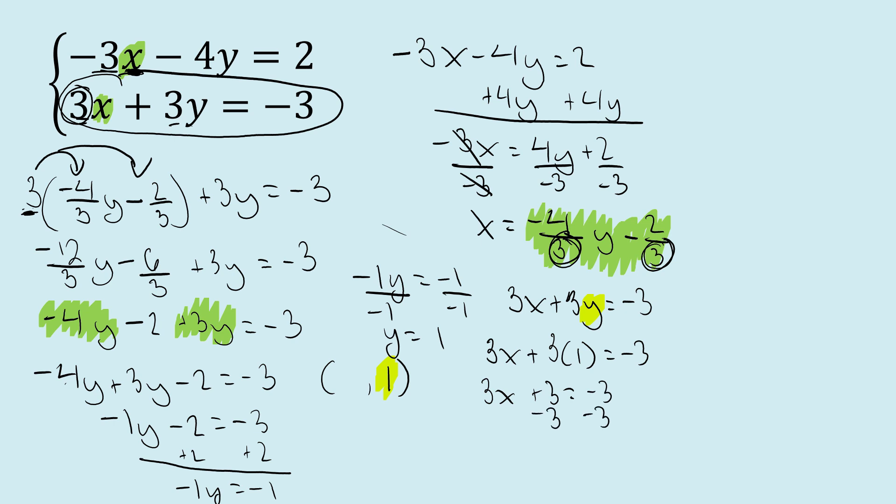Subtract 3. 3x equals negative 6. Let's divide by 3. And we get x equals 2. Actually, negative 2 for dividing a negative. So we're going to get x equals negative 2. So our solution here should be negative 2 and 1.